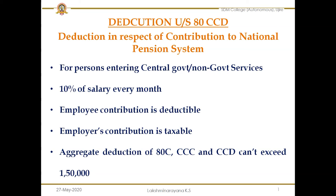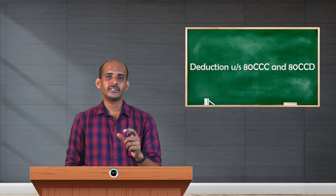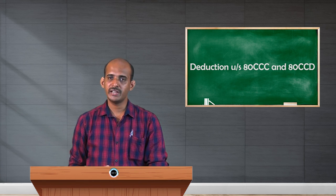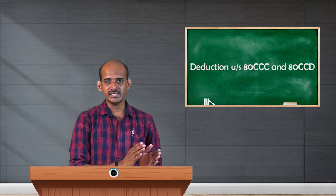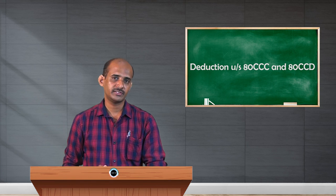Normally, an employer's contribution is not taxable, but in the case of NPS, whatever the employer contributes — typically 10 percent — is fully taxable in the hands of the assessee or employee. Regarding the overall limit, there is a restriction: the total deduction under Section 80C, 80CCC, and 80CCD combined should not exceed ₹1,50,000. If the 80C deduction is already ₹1,50,000, no further deduction under 80CCC or 80CCD is allowed. Together, all three sections allow a maximum of ₹1,50,000.